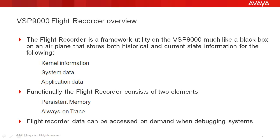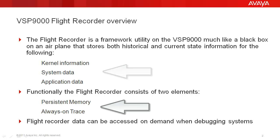The VSP9000 Flight Recorder Utility is a troubleshooting tool that is much like a black box data recorder on an airplane that captures historical and current state information for kernel, system, and application data. The flight recorder consists of persistent memory and always-on trace data that can be used to isolate system faults.